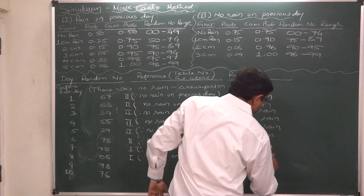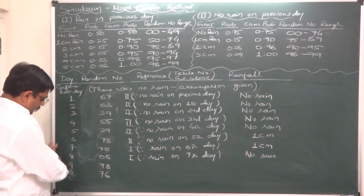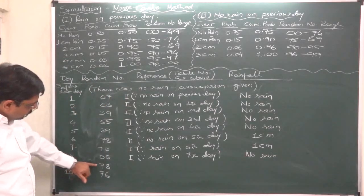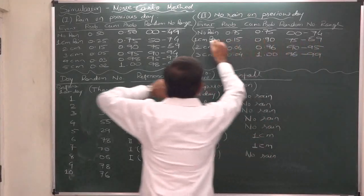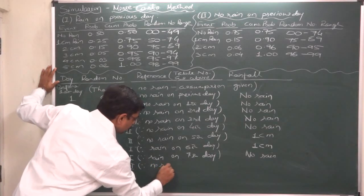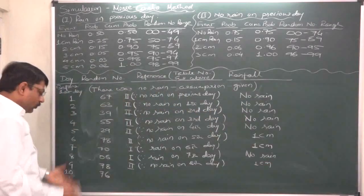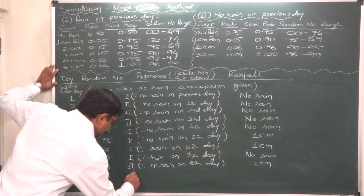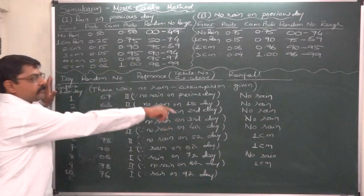For day 9, since there was no rain on the previous day (day 8), we select distribution 2. Random number is 78, which falls in range 75–89, suggesting 1 centimeter of rain on day 9. For day 10, since day 9 had rain, we select distribution 1. This selection is based on our simulation forecast only.